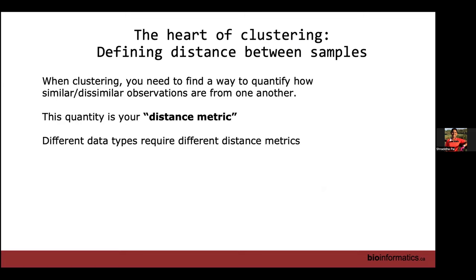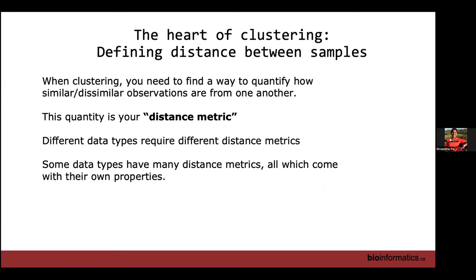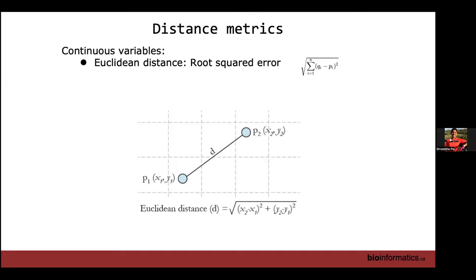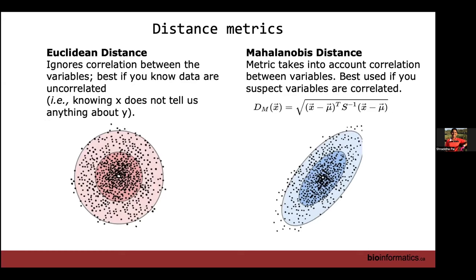Different types of data require different distance metrics. An example from high school geometry: Euclidean distance. Different distance metrics have different formulae, which means they take different things into account. Euclidean distance — everybody learns about this in school. It's just the distance in coordinate space, root squared error. But Euclidean distance ignores correlation between variables. If you know that the data are uncorrelated, you can use Euclidean measures. What does correlated data mean? If x is higher, is y also higher? In the left-hand example it's not correlated — knowing x doesn't tell you anything. On the right-hand side, yes, they are correlated.